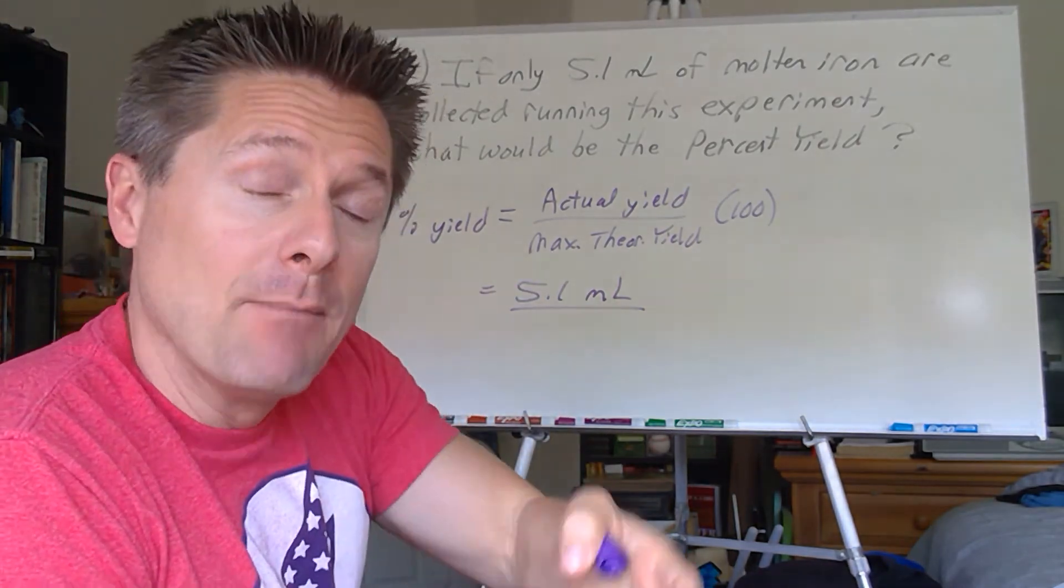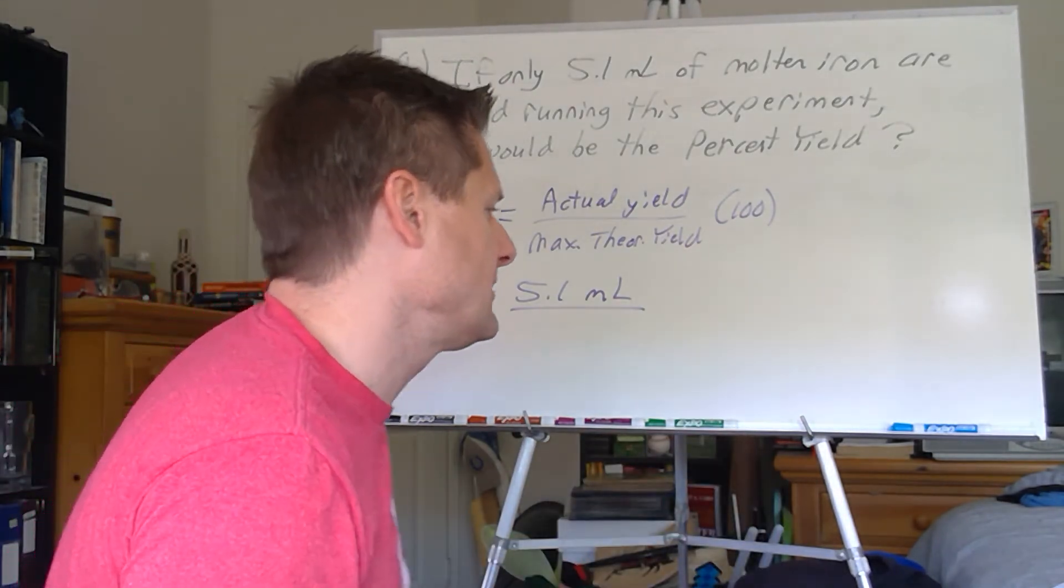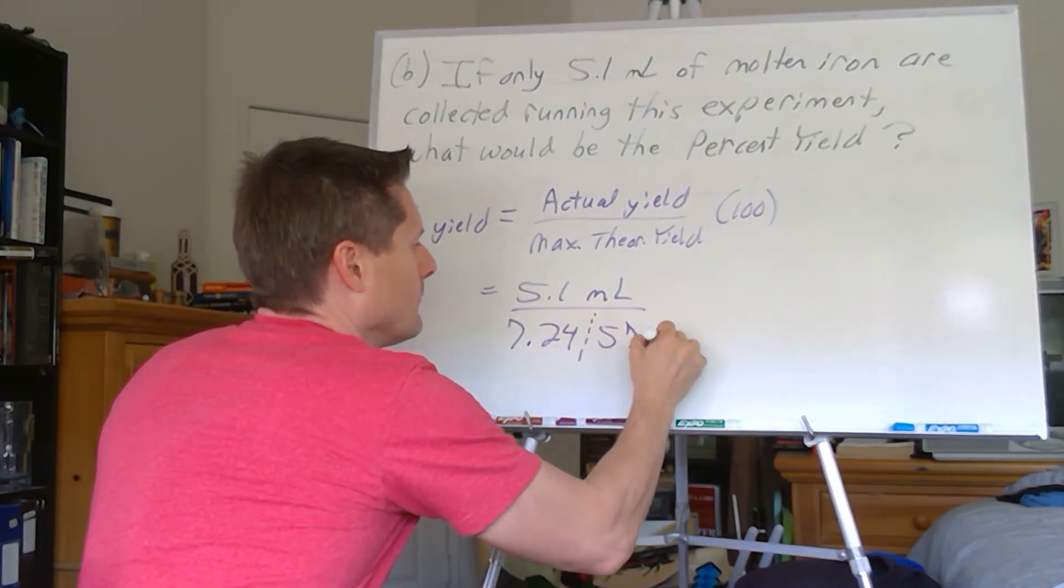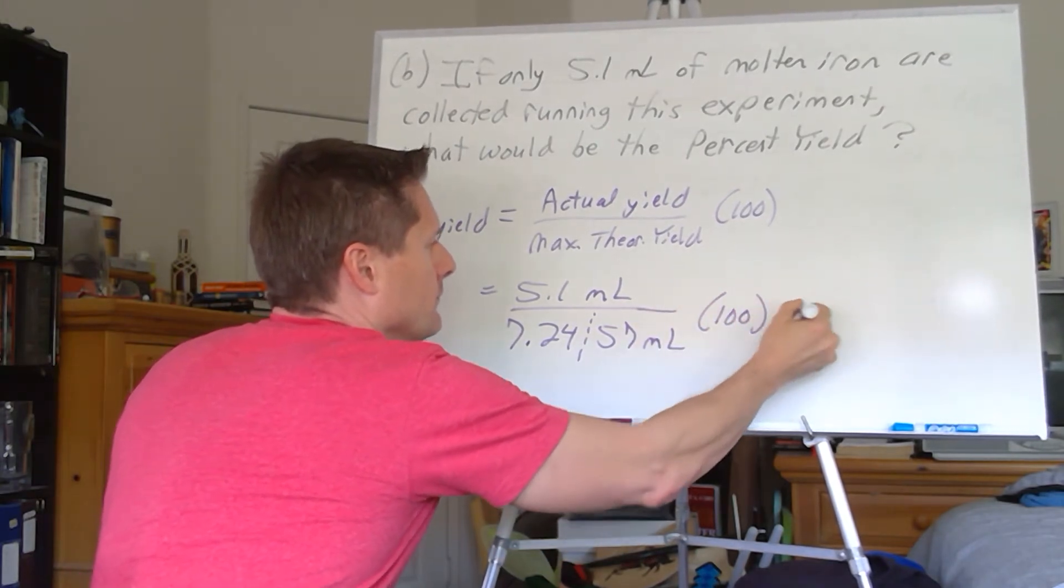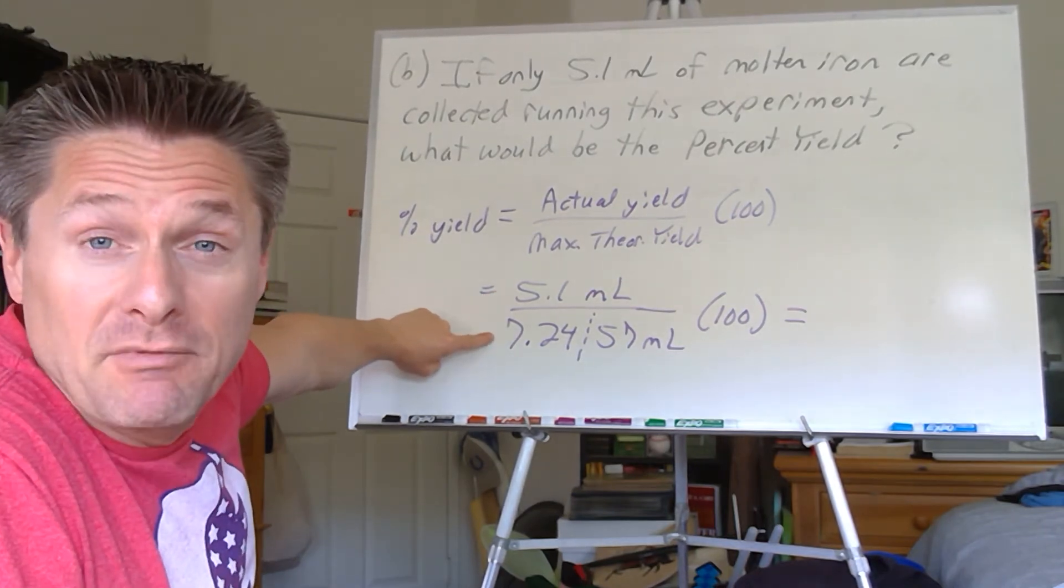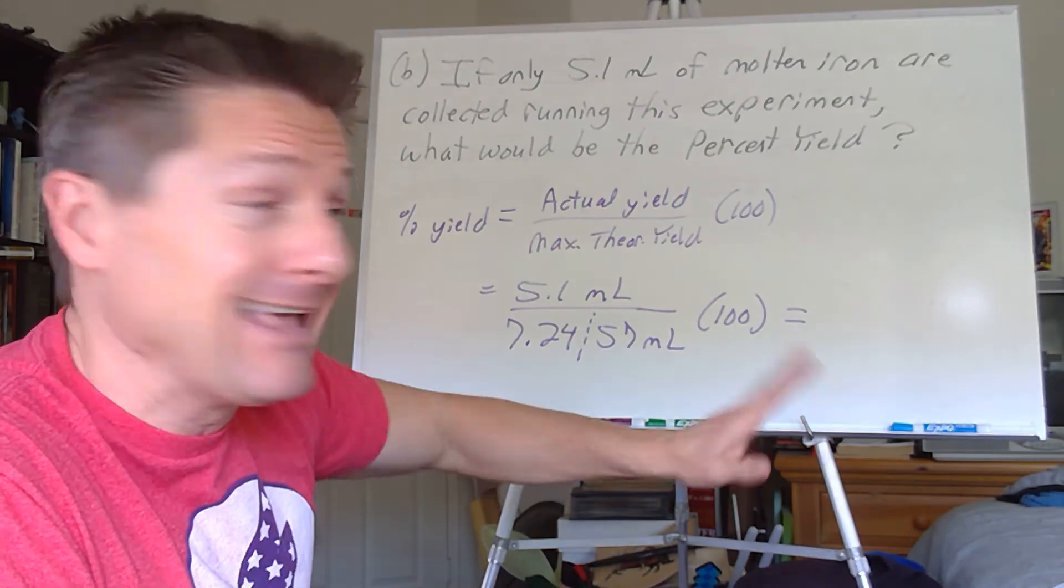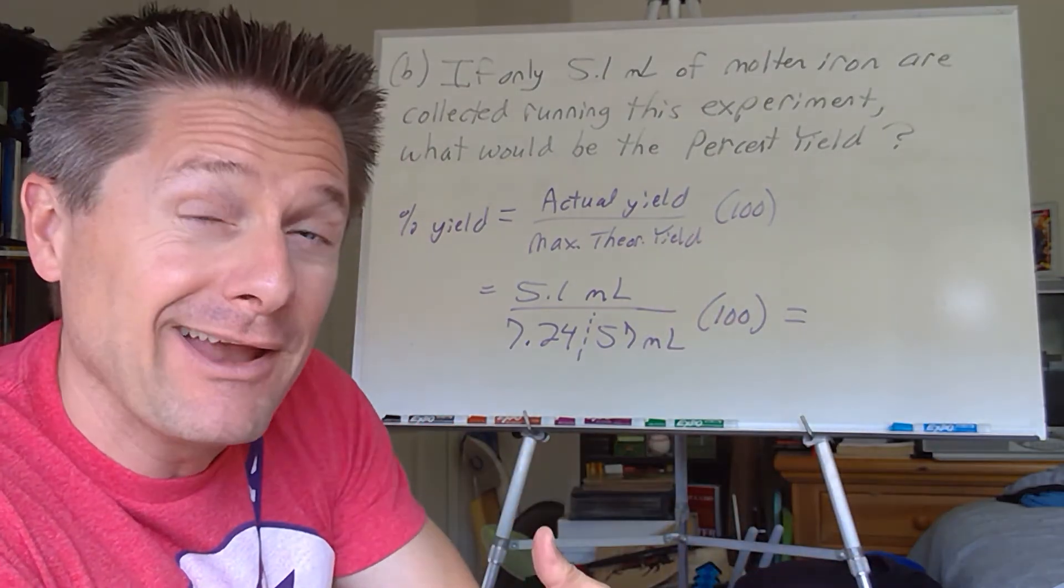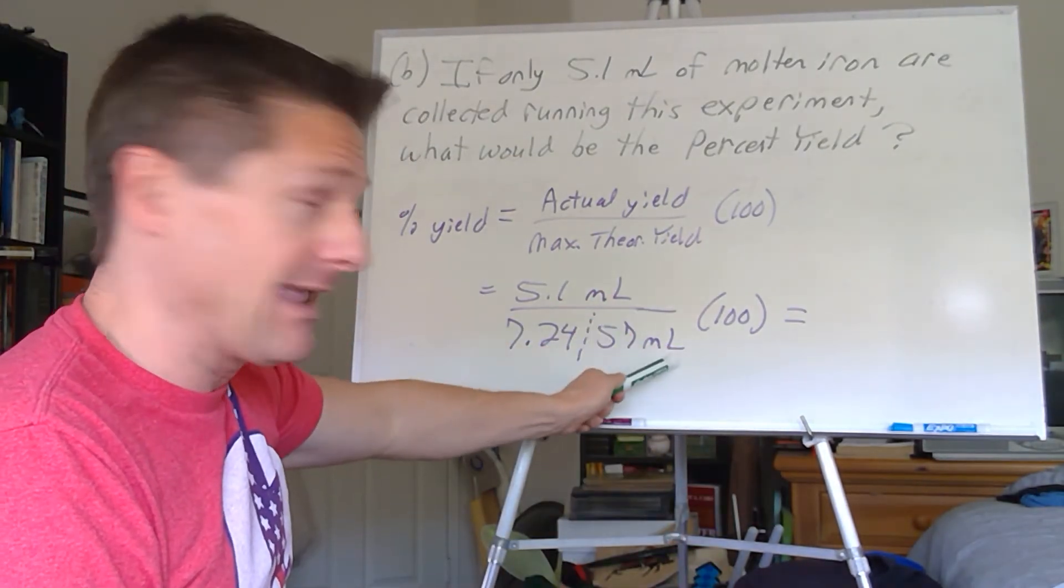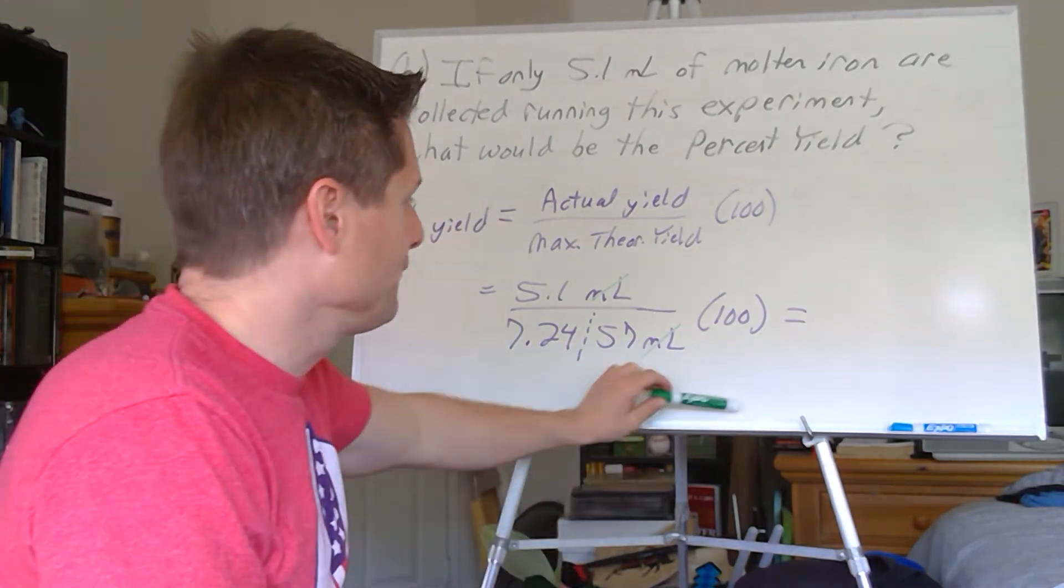Maximum theoretical yield is the non-rounded value from part A. Always use the non-rounded value. What was that, 7.2457. So what we actually got, that's good to two significant figures, over what we were supposed to get, maximum theoretical yield good to three significant figures. Always use the non-rounded value, otherwise you incur rounding error. If we use 7.25, that would give us an answer that's too small, it's smaller than it should be. Use the non-rounded value, always. Make sure the units are the same. This can't be milliliters and that can't be kiloliters or fluid ounces or something. They've got to be the same unit, comparing the same thing.